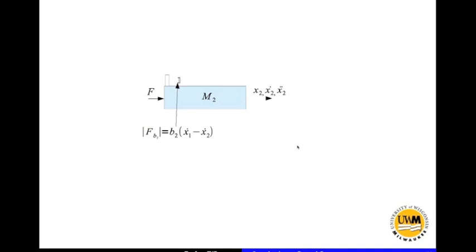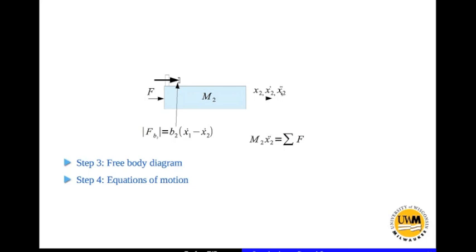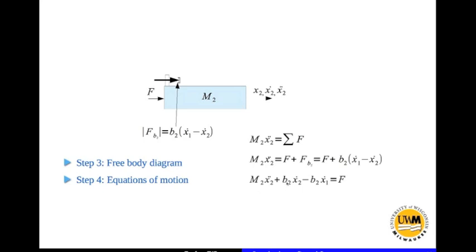Now we go to the second mass. The things connected to M2 are this damper and the external force F. We draw the free body diagram. As noted, this damper is in extension, so its natural tendency is to pull inward. On M2, the damper will be pulling in the positive x direction. We write the equation of motion: M2 x2 double dot is positive because M2 is moving in the positive x direction, and it equals the sum of all forces. F is positive because it points in the positive x direction, and the damper force is also positive. Substituting: M2 x2 double dot + B2 x2 dot − B2 x1 dot = F. Again, the coefficients of x2 double dot and x2 dot are both positive, which confirms the result. That's the end of this example.